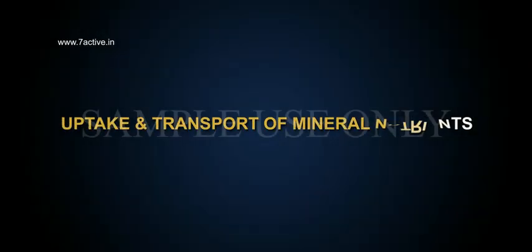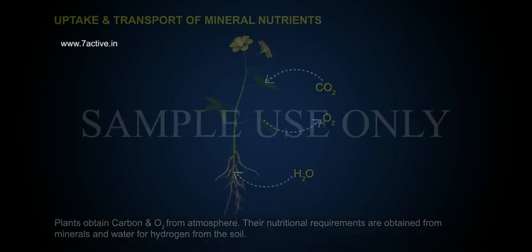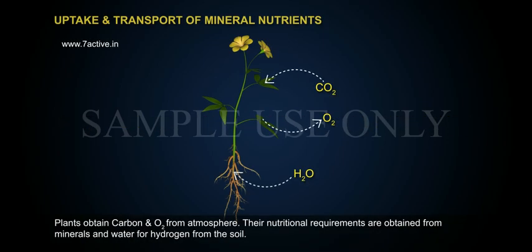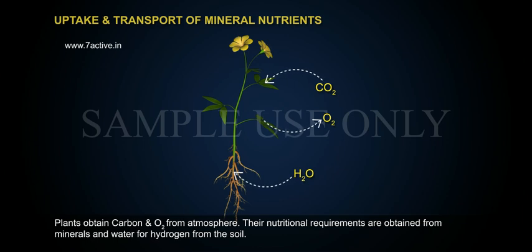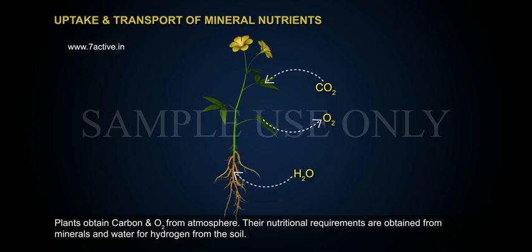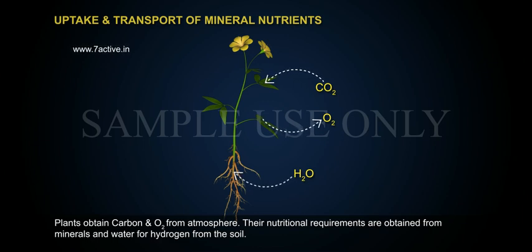Uptake and Transport of Mineral Nutrients. Plants obtain carbon and O2 from the atmosphere. Their nutritional requirements are obtained from minerals, and water for hydrogen, from the soil.